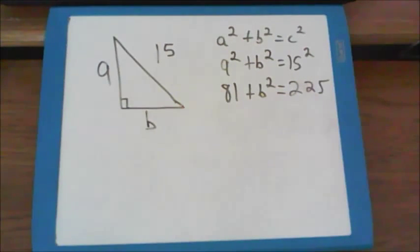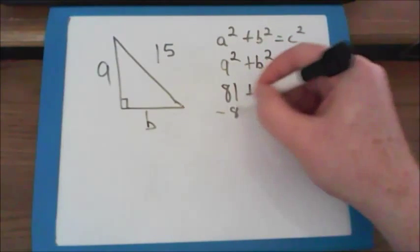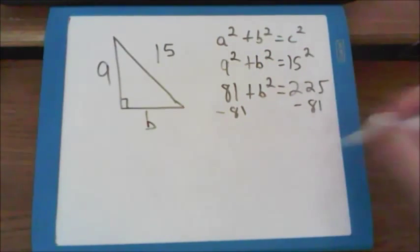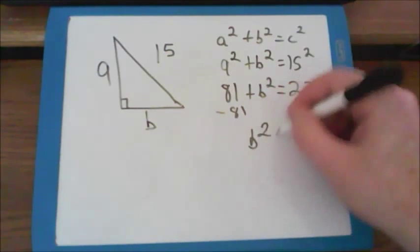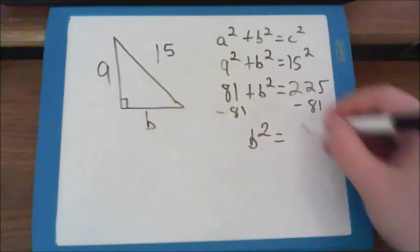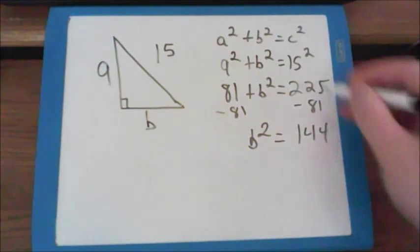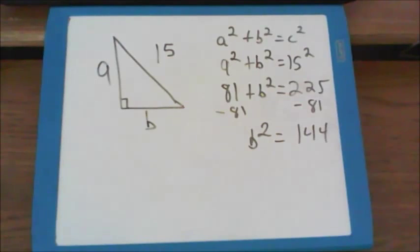This is where things take a different turn. If I knew a and b, I could add them together. But here I'm trying to find out how much b is worth. So I have to get the b squared by itself. Here's where a little bit of algebra comes in. I have to subtract eighty-one from both sides, or subtract however much the a squared is worth, so that I can get b squared by itself. And that equals one hundred and forty-four when I do two twenty-five minus eighty-one.